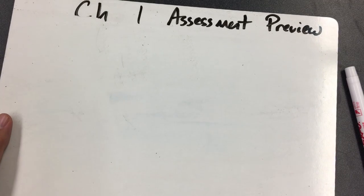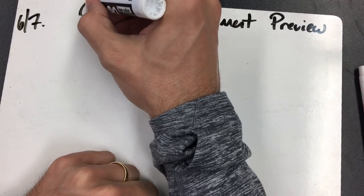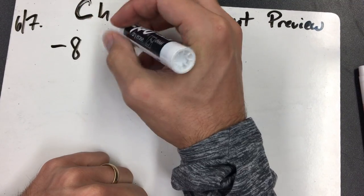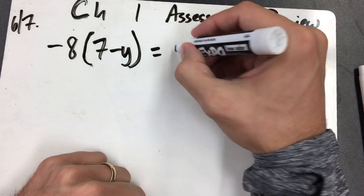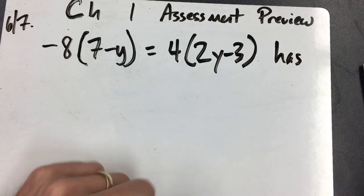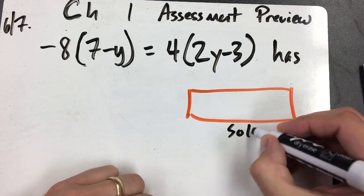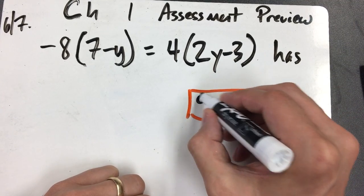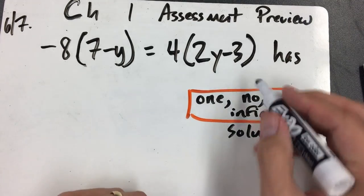Questions 6 and 7 are almost the exact same type: they'll ask how many solutions does this equation have. That will be a drop-down box with three choices: one solution, no solution, or infinite solutions. You'll need to pick one of those three. To know which to pick, you have to solve it.